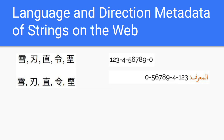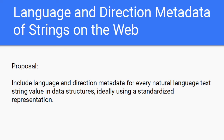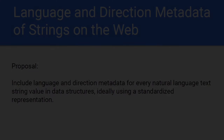The number on the right is an ISBN number. When dropped into a right-to-left context, when preceded by Arabic text, you will get the result just below, which is incorrect, because the sequencing is wrong, and this may not even be apparent to the reader, who will expect to read such numbers from left to right. In order to solve this problem, we are discussing with the W3C Technical Architecture Group and TC39 about the proposal to include language and direction metadata for every natural language text string value in data structures using a standardized representation.